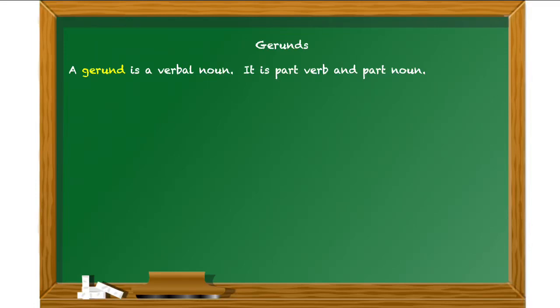In this video, we look at two new parts of speech, and the first one is the gerund. A gerund is a verbal noun — in other words, it is part verb and part noun.